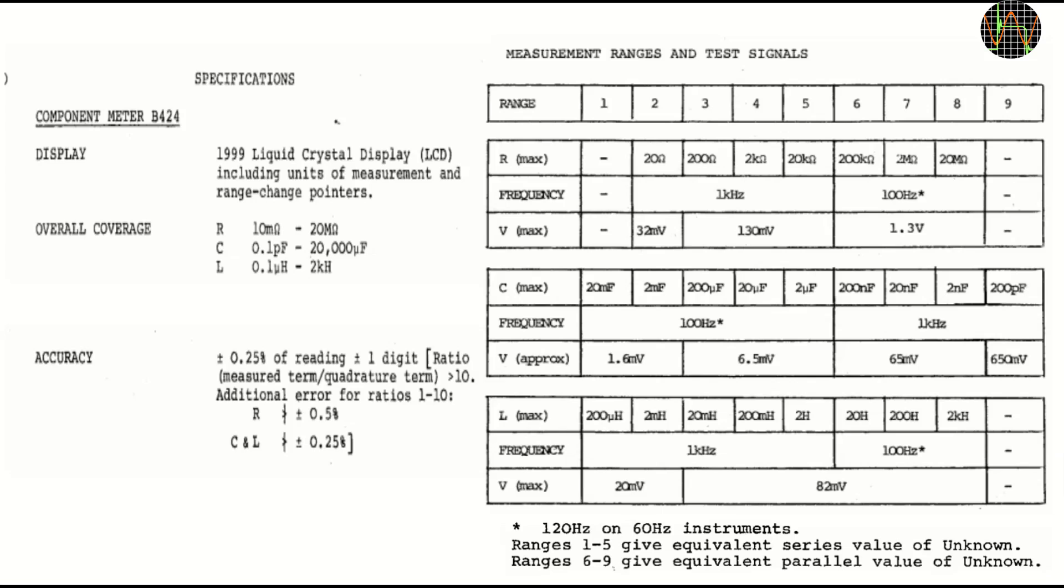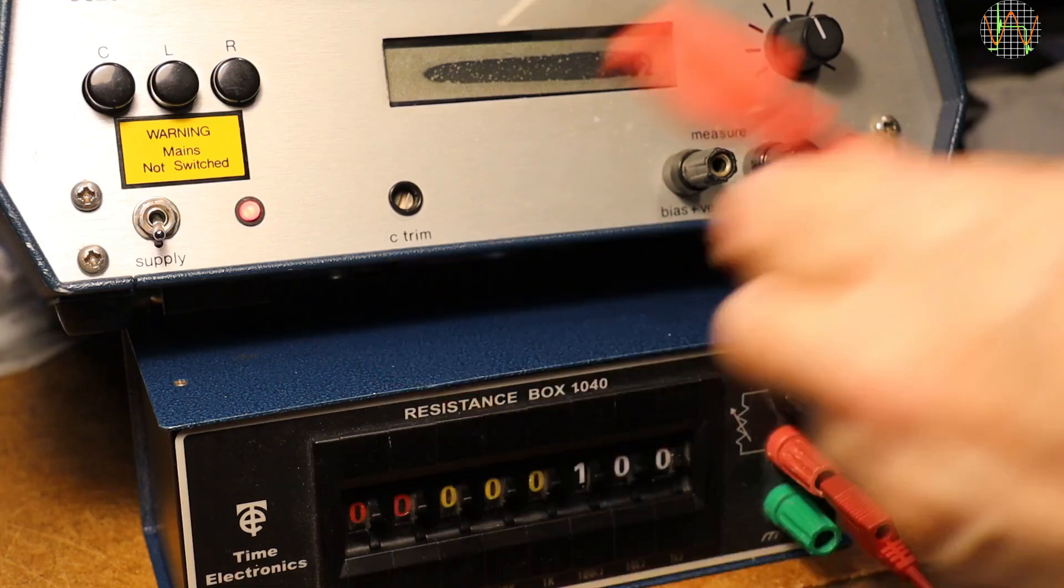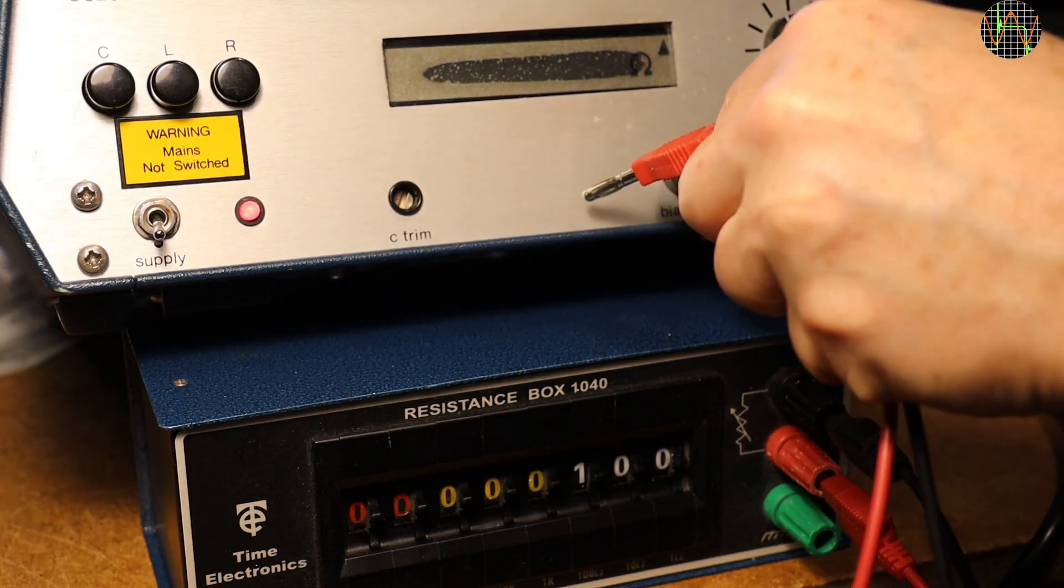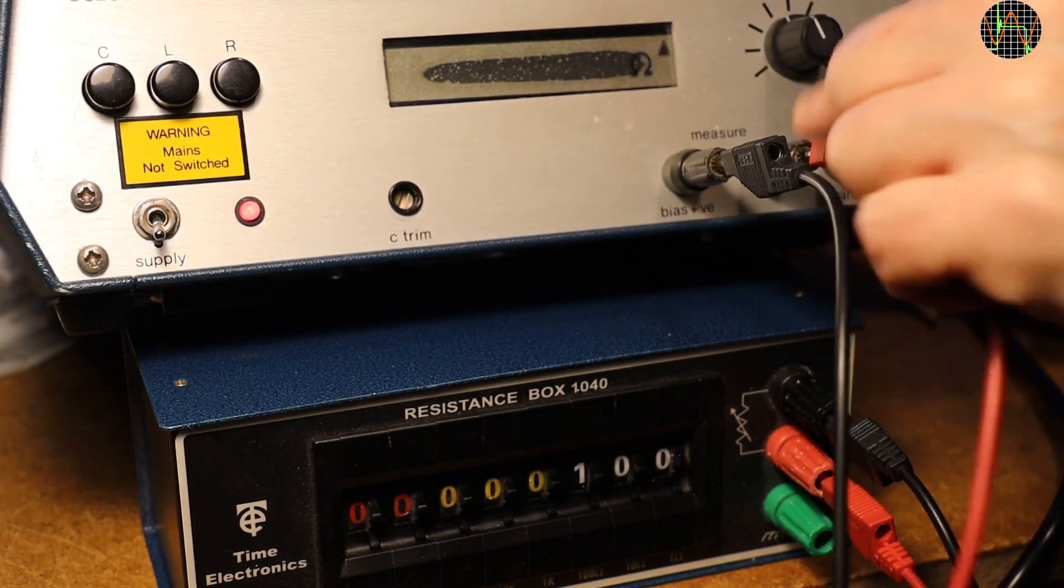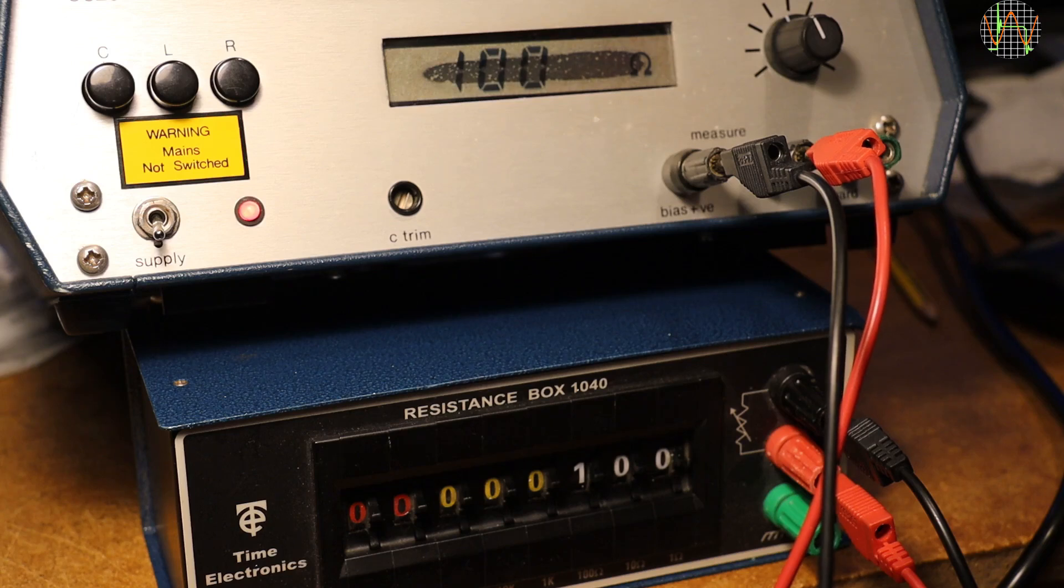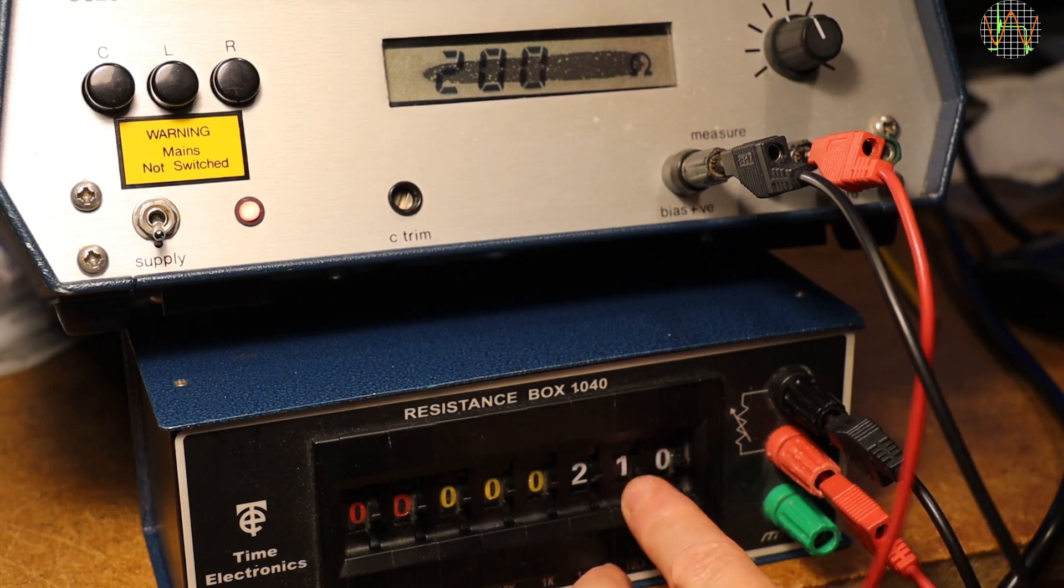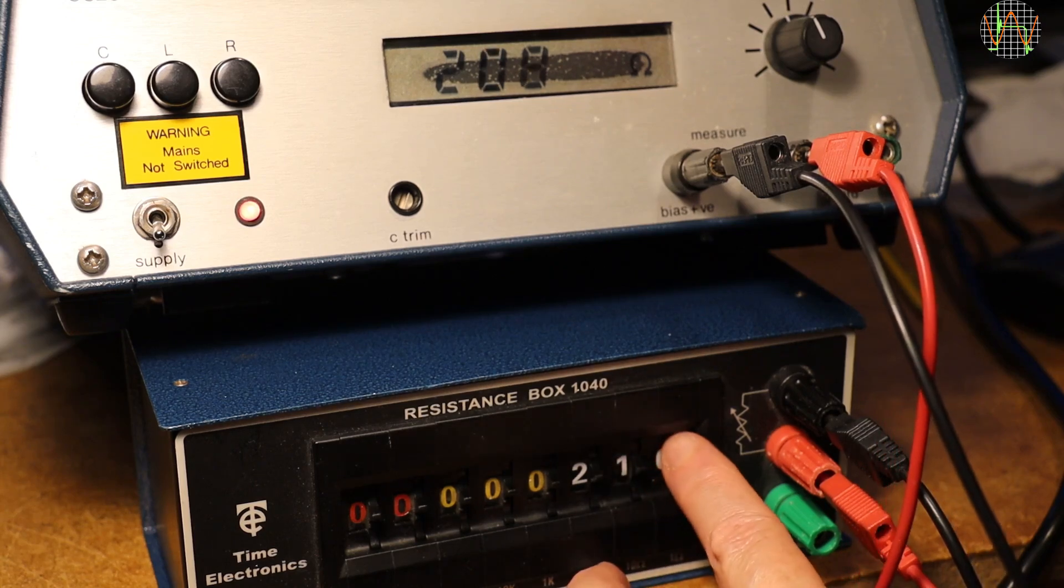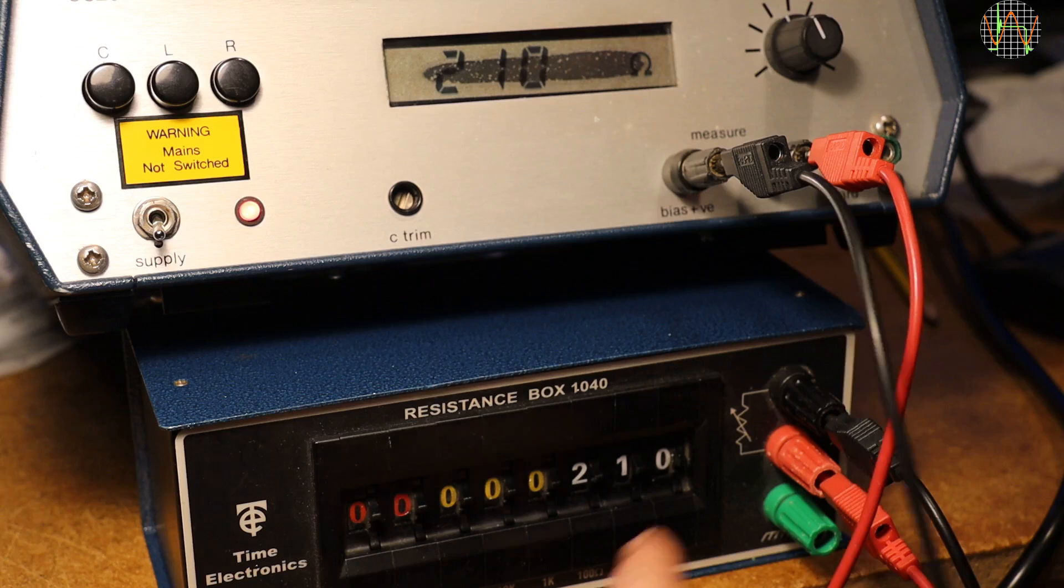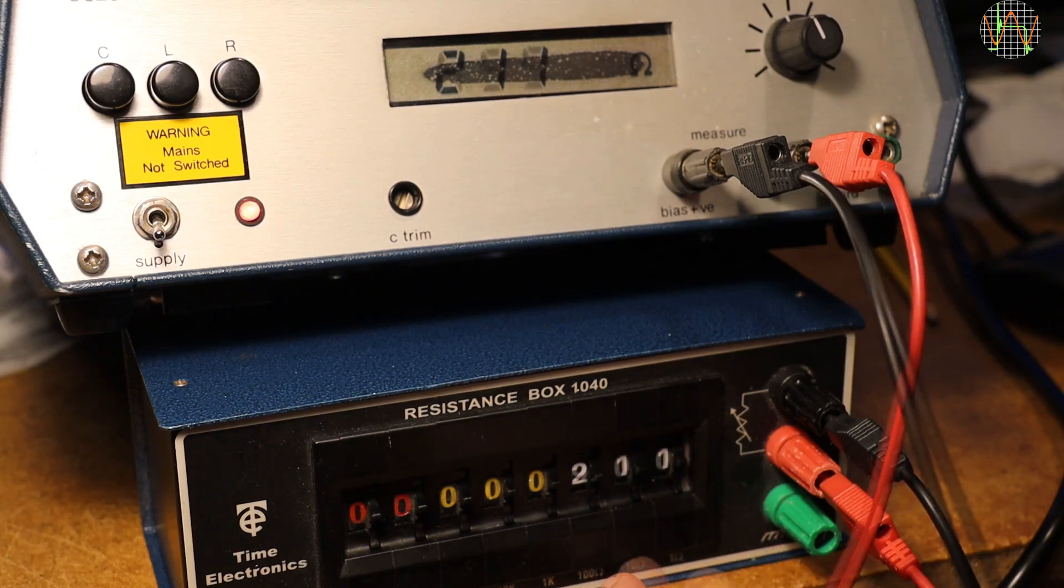It uses a sine wave of either 100 Hz or 1 kHz. For my first test, easiest is of course R or resistance and I connect a resistance decade box set to 100Ω to the B424. Despite the problems with the LCD, the display is somewhat readable, good. And changing to other resistance values on the decade box seems to work just fine.